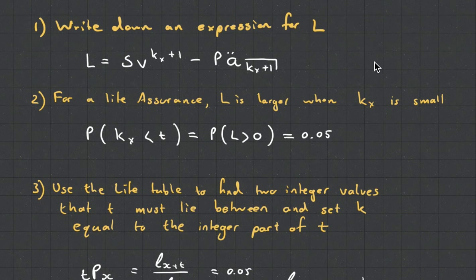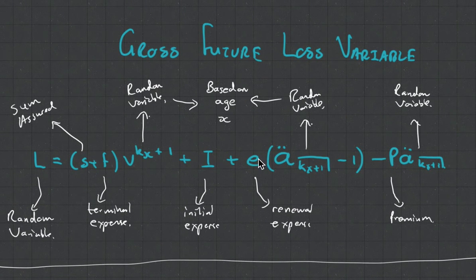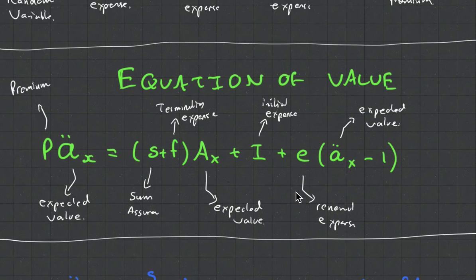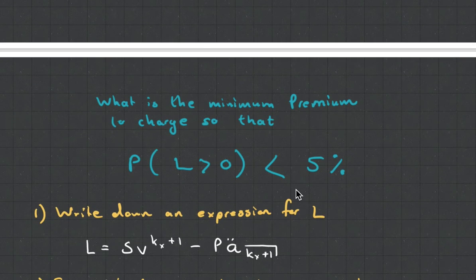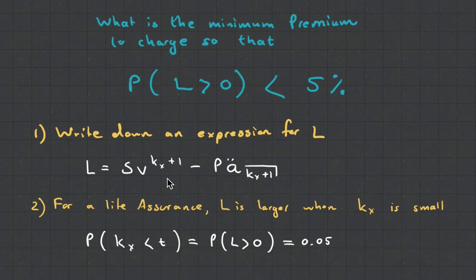What you want to do first is write down an expression for your loss random variable. I'm getting that from this guy here, gross future loss variable. You don't have to learn that formula because you'll be able to derive it once you get into the subject. So you want to write that down.